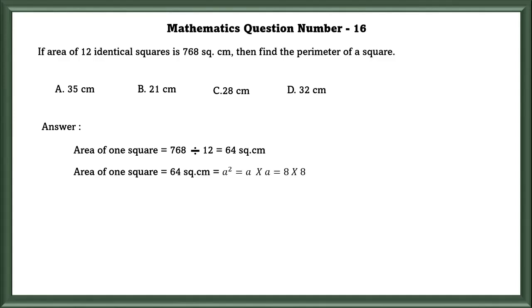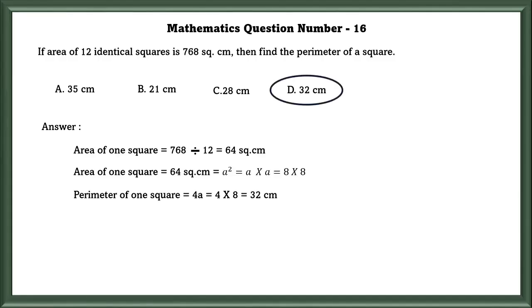Now, we have to find the perimeter of a square. Perimeter of a square is equal to 4A, and one side is equal to 8 centimeters. We multiply 4 into 8, which is equal to 32 centimeters.